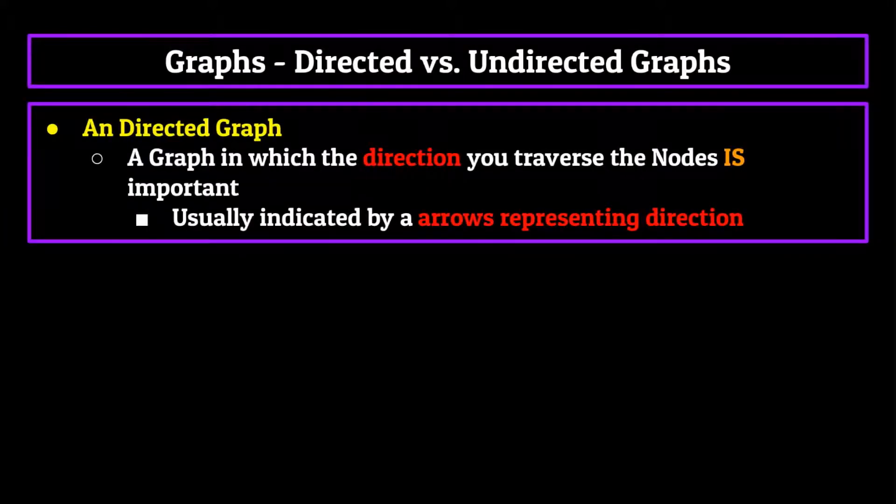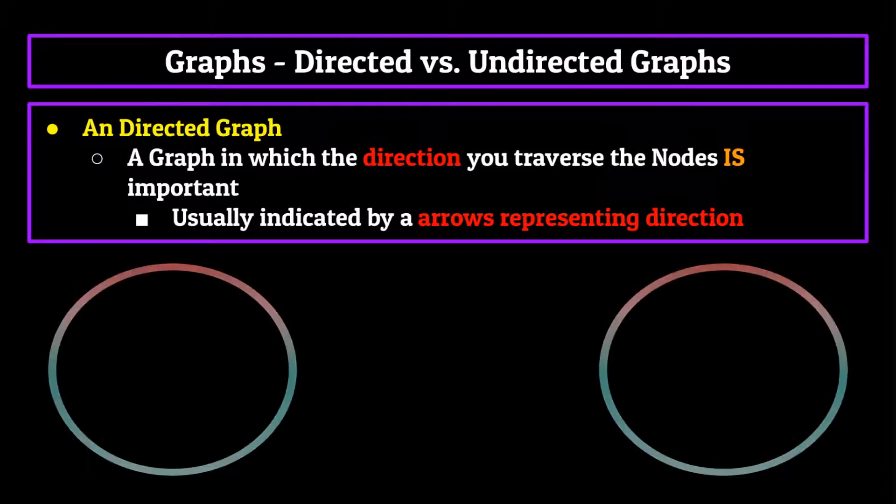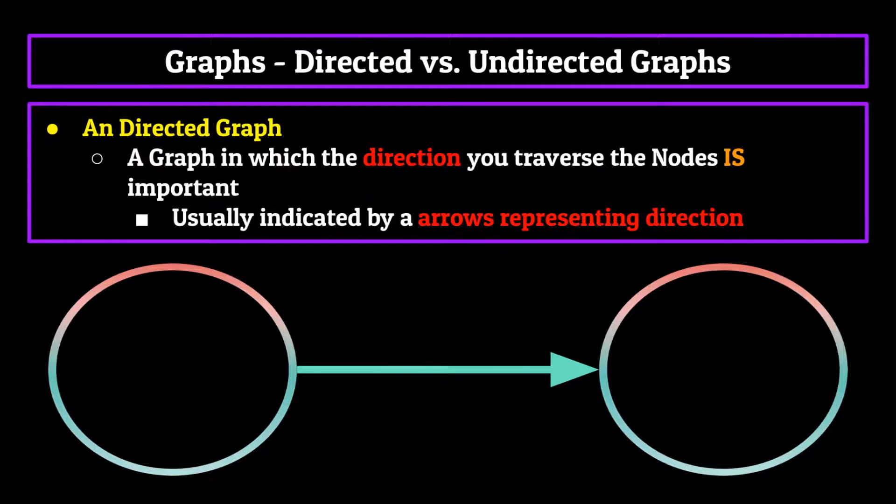In contrast, a directed graph is one in which the direction you traverse the nodes is important. This is usually indicated by arrows representing which nodes a certain node can traverse to. The edges could point both ways, but they don't necessarily have to. It's very possible the edge only points one way.